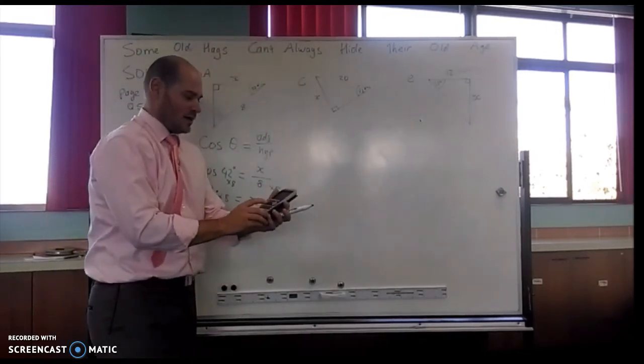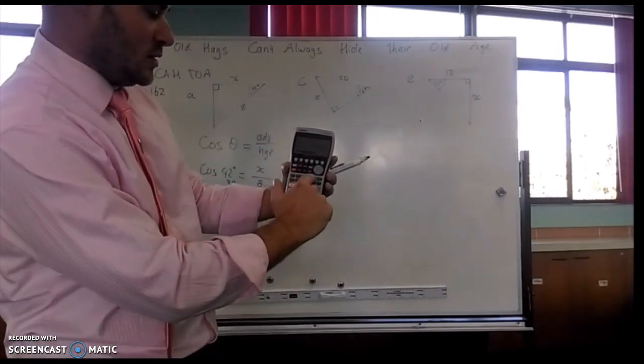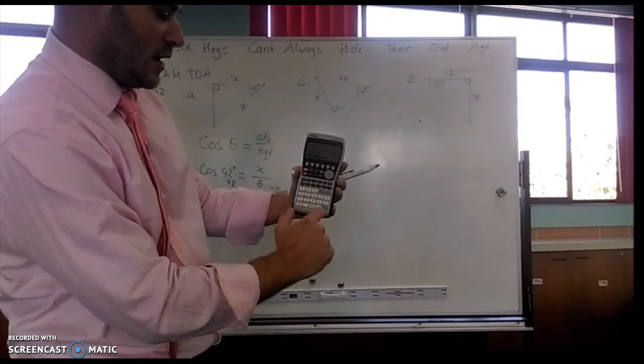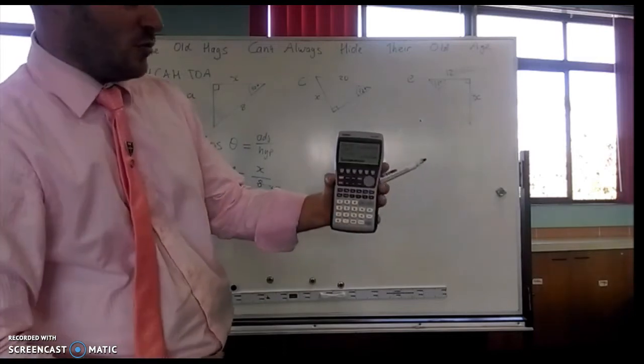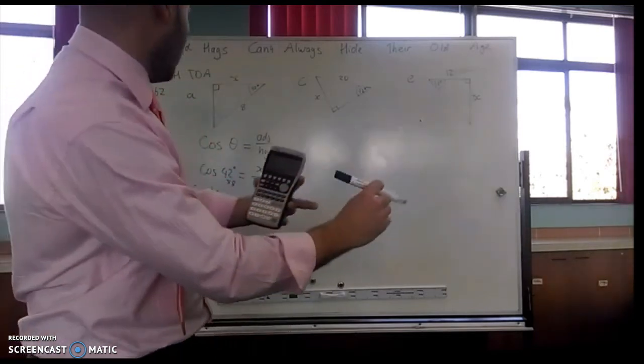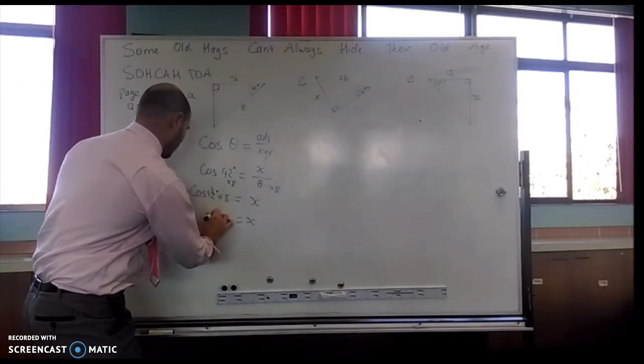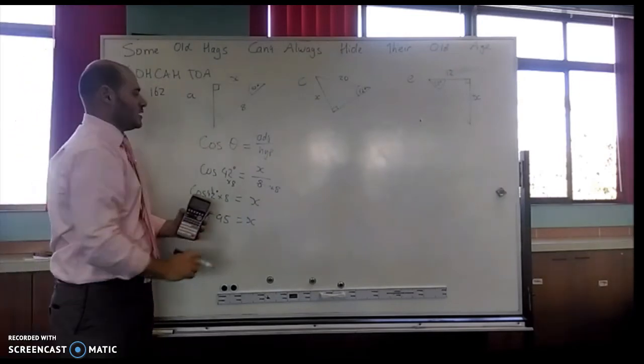Now with my calculator, I just go cos 42 times 8 equals. So I get my answer there, 5.945. So I'm going to round that to two decimal places, and my x becomes 5.95. There's our cosine.